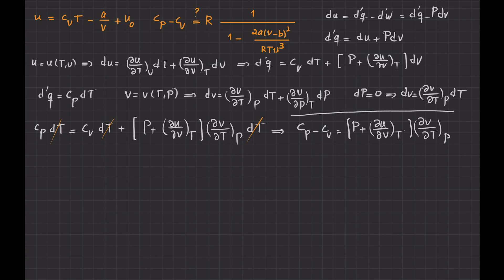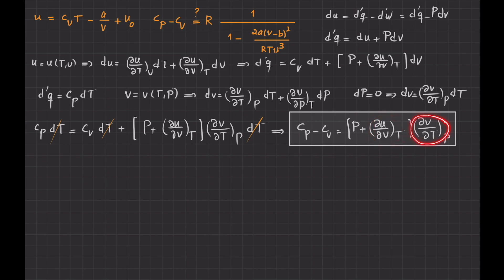This is a completely generic formula in thermodynamics, independent of the properties of any specific gas. Now I want to apply this generic formula to the case of a Van der Waals gas, so I need to calculate both partial derivatives. To calculate the partial of U with respect to V, I use the energy equation directly given in the problem. For an ideal gas this combination is zero, but for the Van der Waals gas I must use this energy equation.